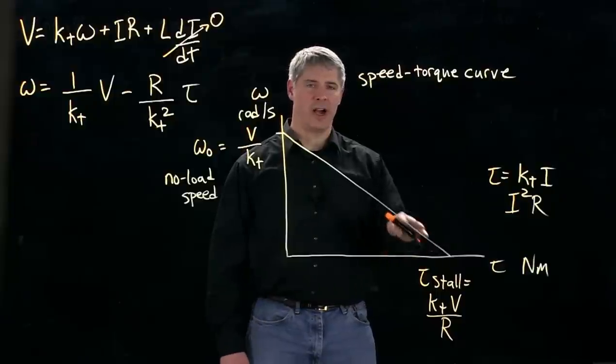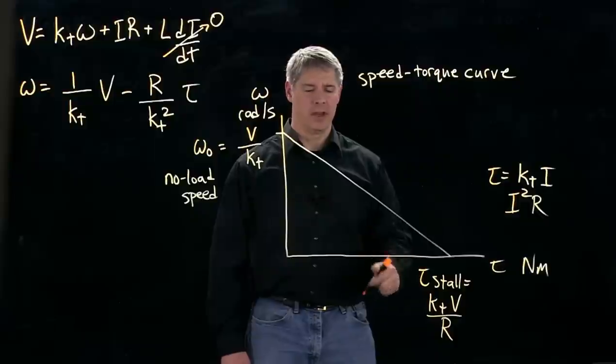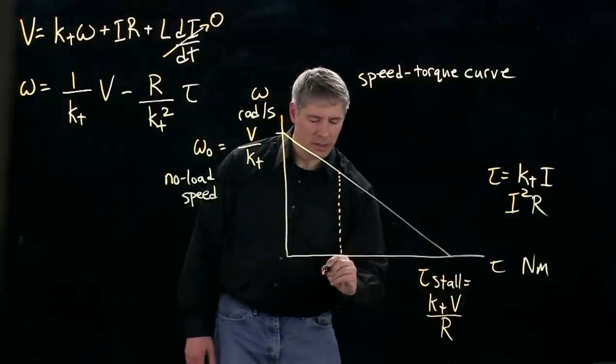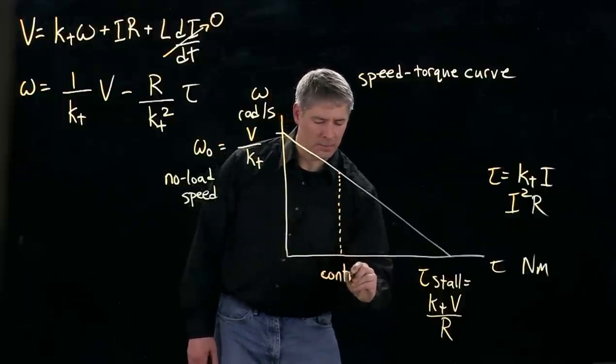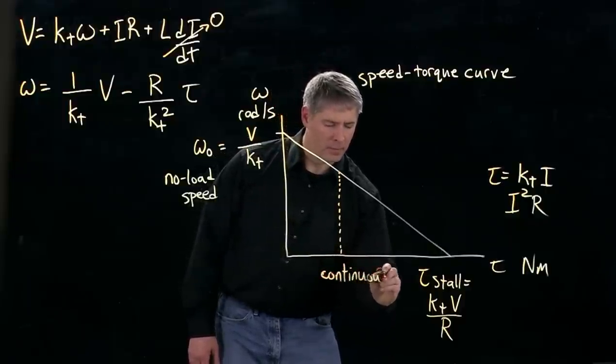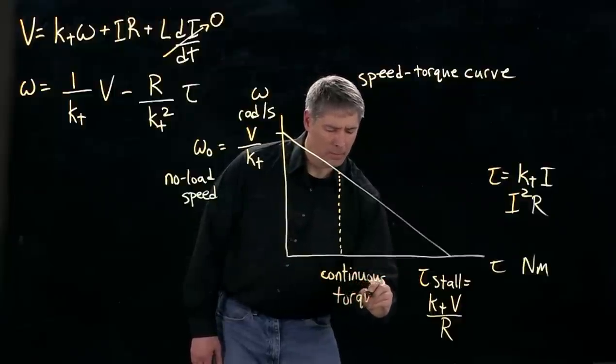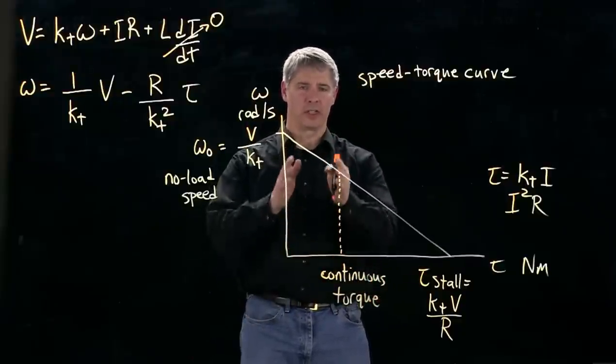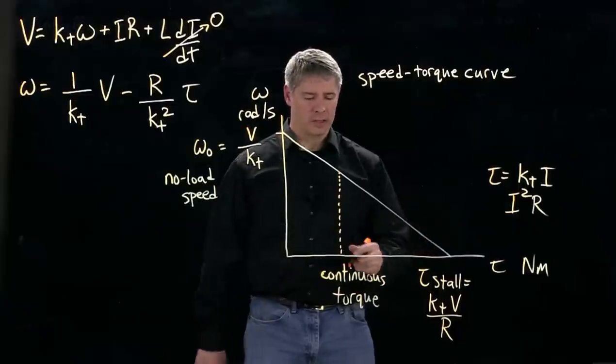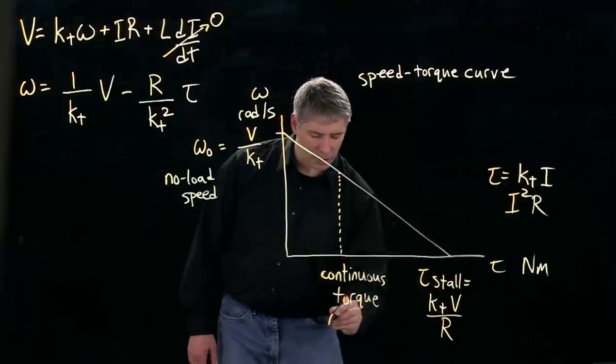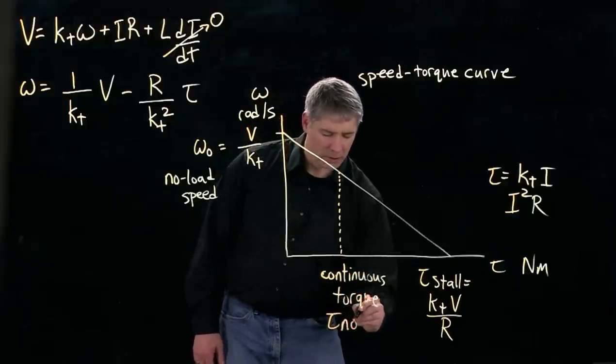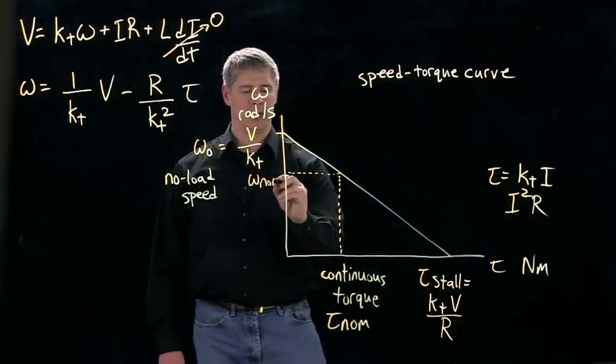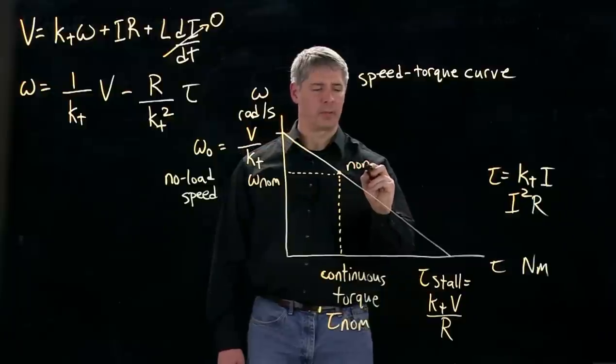So we don't want to stay out here where there's high current for long periods of time. So for that reason, we usually define a maximum continuous torque, and it's safe to operate continuously with torques anywhere in this region, but not out here. So often this is called the nominal torque, and the corresponding speed here is called the nominal speed. And this is called the nominal operating point.